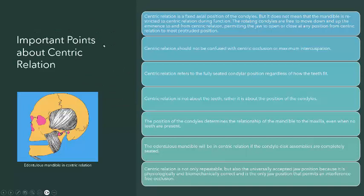There are certain important points related to centric relation. Even with edentulous jaws, centric relation can be easily achieved and we can record that position. Centric relation is a fixed axial position of the condyles, but it does not mean that the mandible is restricted to centric relation during function. The rotating condyles are free to move down and up the eminence to and from centric relation.